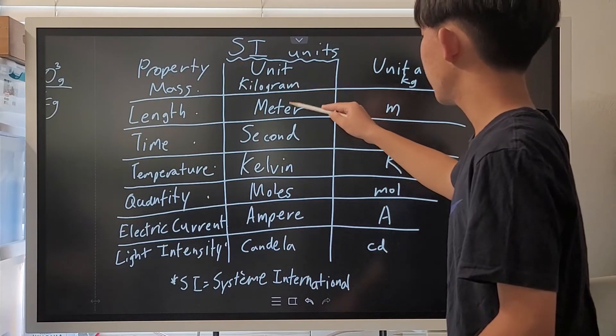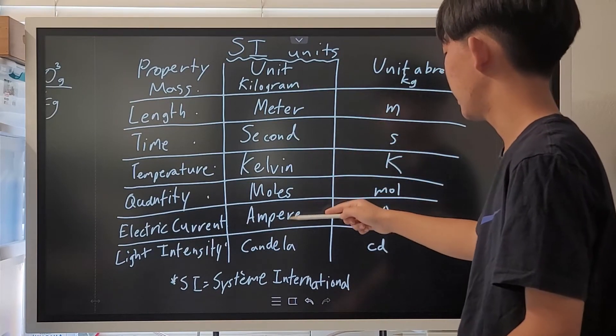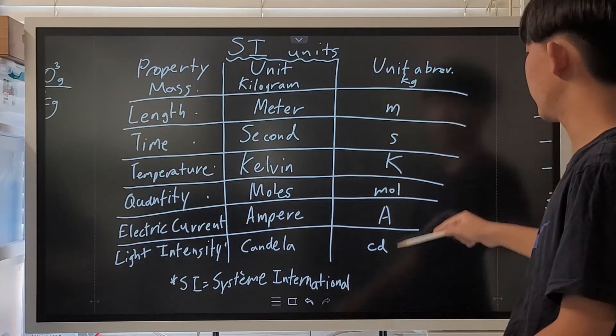Their units are kilograms, meters, seconds, kelvin, moles, amperes, and candelas, and their variations are here.